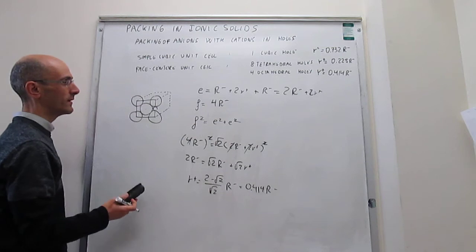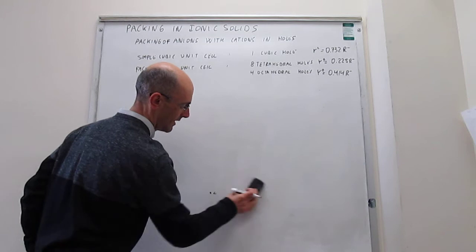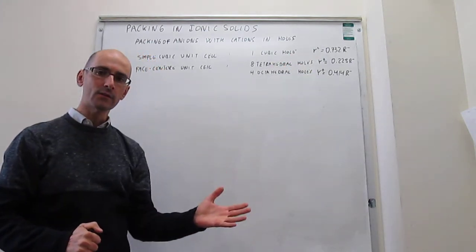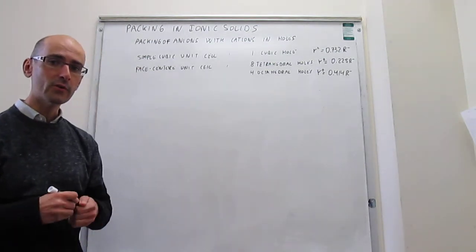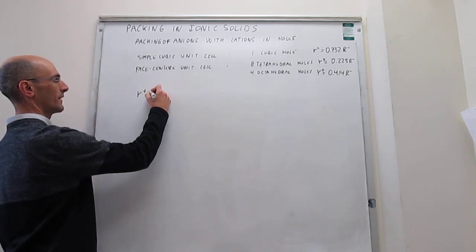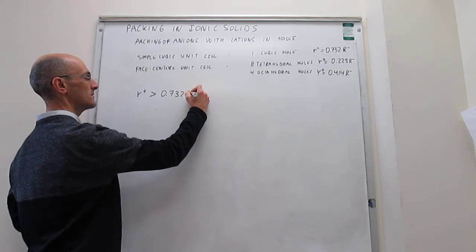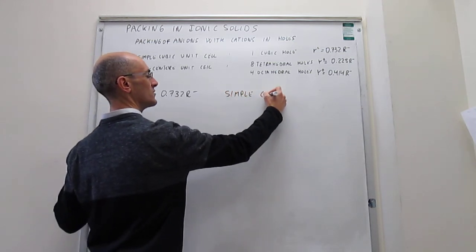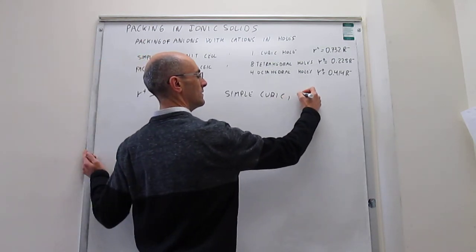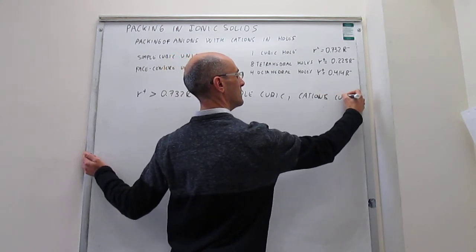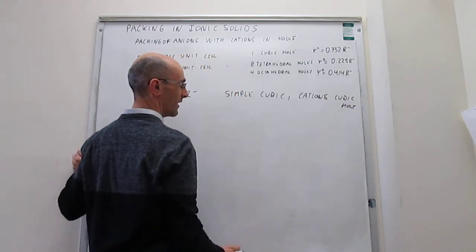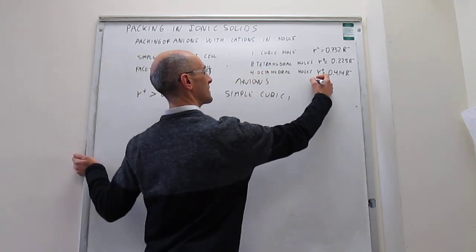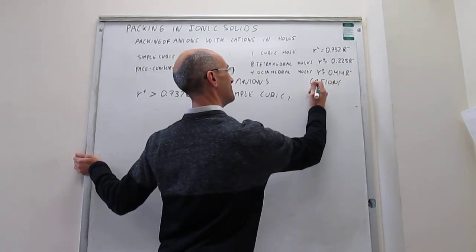So having those limiting radii for all of the structures that we have seen here, and those are the ones that are more common, allow us to then try to predict what the general packing would be according to the various relationships of the cationic radius and the anionic radius. So here are your choices. If you have that the cationic radius is larger than 0.732R-, then the preferred packing structure would be a simple cubic. That's what the anions would do, and then the cations would be in the cubic hole.